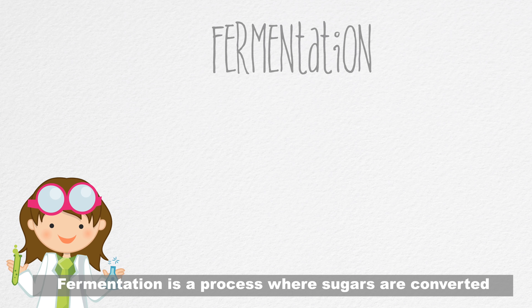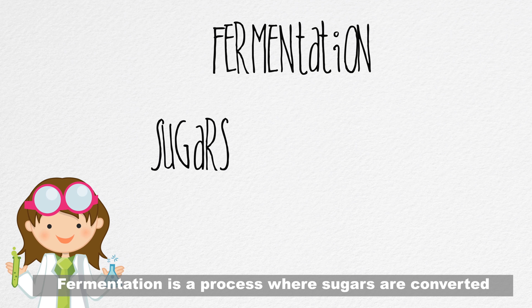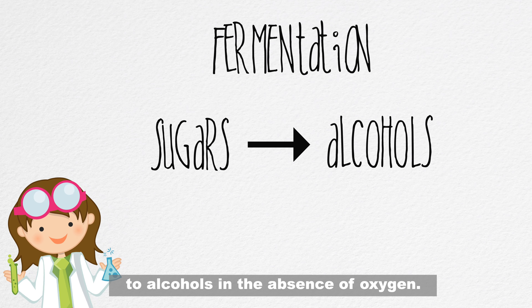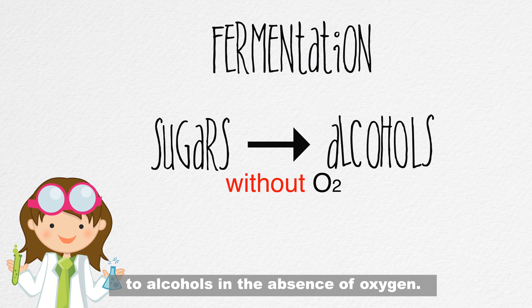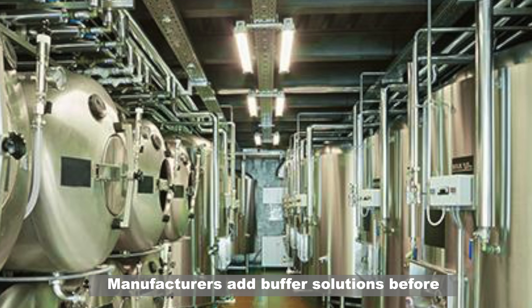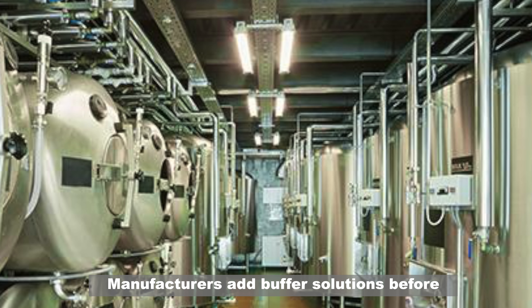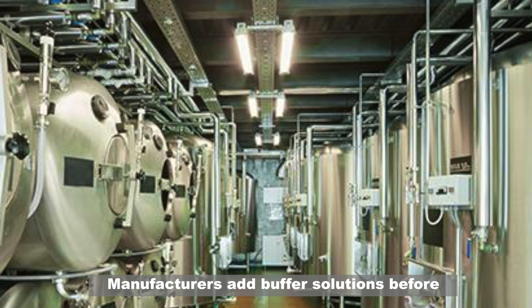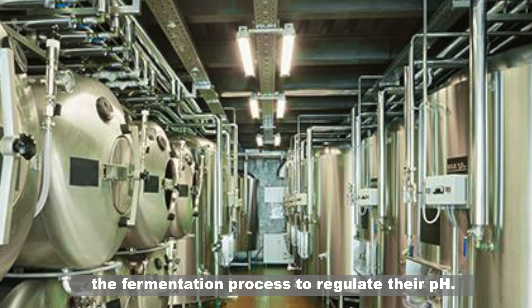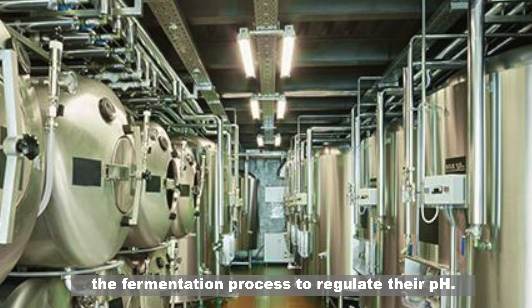Number five: In printing industries. Buffers play a key role in printing industries. The pH of paper and ink must be controlled so that the ink properly penetrates the paper without smudging.